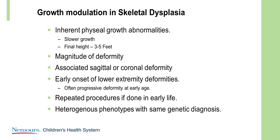There's usually a very early onset of these deformities, and they're often progressive early in life, so sometimes you have to consider treatment as early as two, three, or four years of age. That means you're going to have repeated procedures through life. And very importantly, it's hard to predict which ones will get worse, because the phenotypes vary tremendously with the same genotype.